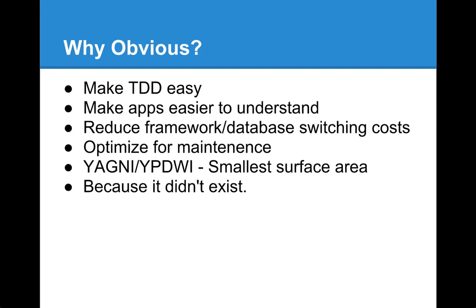Making apps easier to understand by pulling out the application into a separate thing, you can focus just on the app. You don't have to think about what Rails is doing or where your models, views, and controllers are. You can say my app is really a collection of actions and a collection of things — a collection of entities and a collection of actions. That's really what defines your application. When possible, Obvious tries to optimize for maintenance.